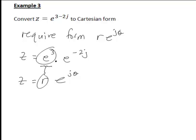So this has actually now been rewritten in the form r e to the jθ, where here r is just the e cubed and the θ is equal to negative 2. And in exponential form, θ is always expressed in radians.